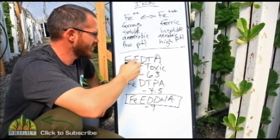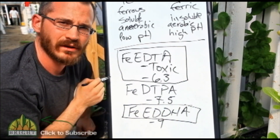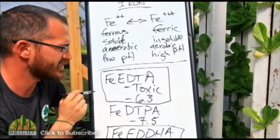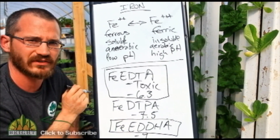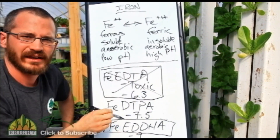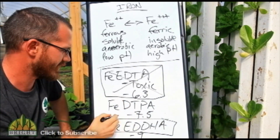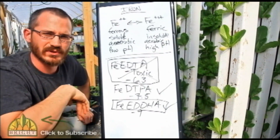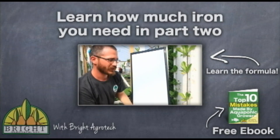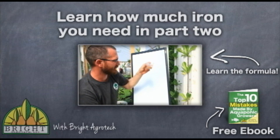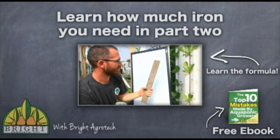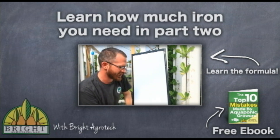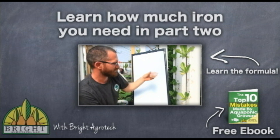To recap: Fe-EDTA is often sold as an iron supplement for aquaponic systems, but people who use this are wasting their money most of the time and often don't understand the effect it can have on their system — stay away from it. Fe-DTPA: good. Fe-EDDHA: also good. Both of these forms of chelated iron are great to use in an aquaponic system. We've talked about how iron is or is not available, how to make it chemically available, and why using non-chelated iron is a complete waste — we need to be using chelated iron. The next question is: how do we know how much to put in?